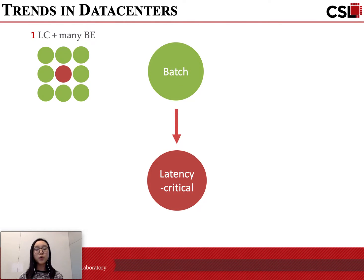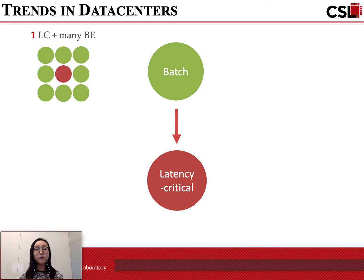First, batch jobs are progressively shifting to latency-critical jobs. For example, traditionally throughput-bound applications like MapReduce and Graph Analytics are now moving to in-memory computation, which brings task execution latencies down to a few milliseconds or seconds. Therefore, there will be more latency-critical jobs.